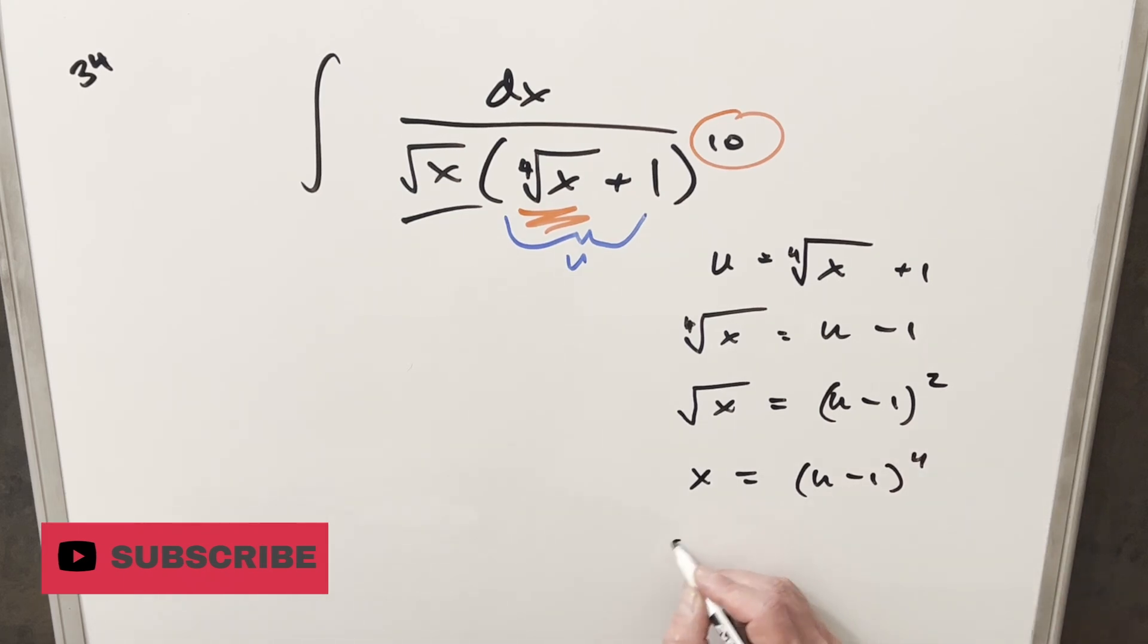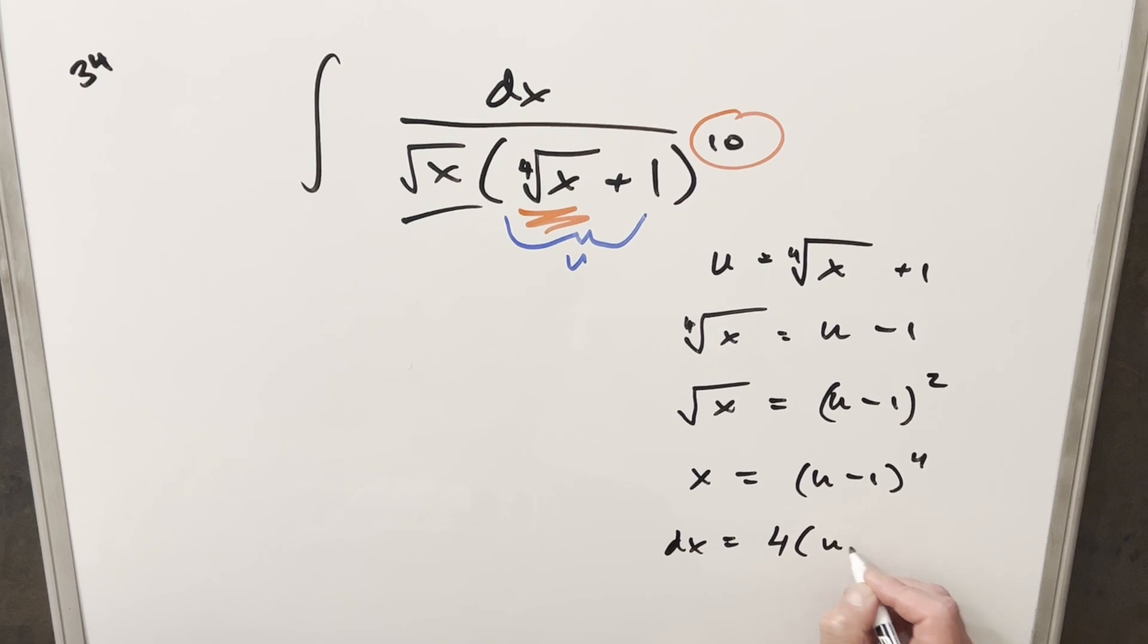Then take a derivative to get the dx value. So for dx using power rule on this we're going to have just 4 u minus 1 cubed. We could use the chain rule but the derivative of that's just going to be 1 so we'll put a du on the end and that's going to be our dx.